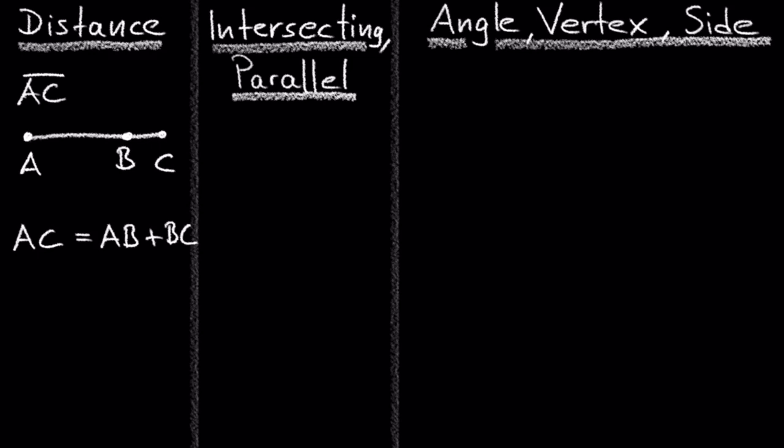Let's say the distance BC equals 2 cm and the distance AC is 7 cm. How do we find the distance AB?